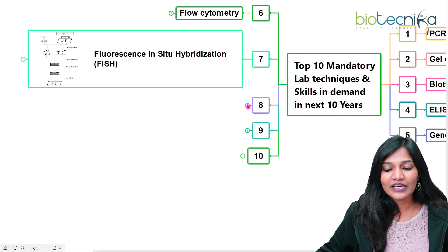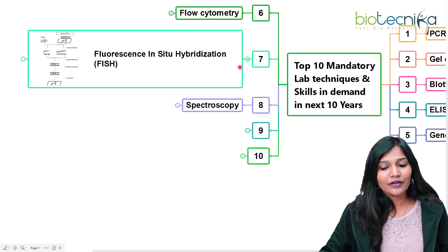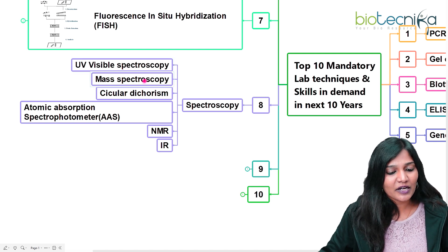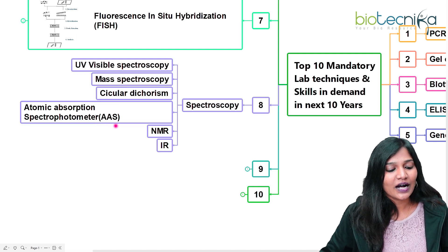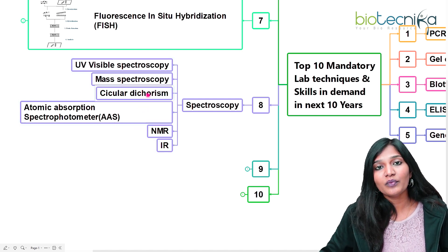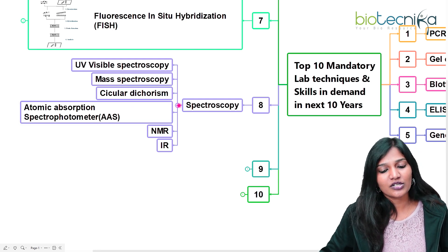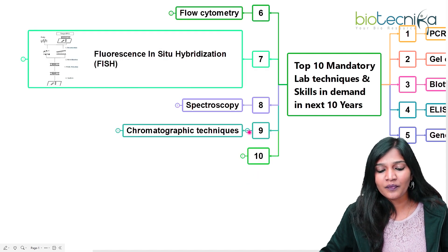The next important skill is spectroscopy. There are many types — UV-visible spectroscopy, mass spectroscopy, circular dichroism, IAS, NMR, and IR. If you know mass spectrometry, UV, or IR spectroscopy, that is very good. It is not necessary for a biologist to know circular dichroism, but knowing it is an advantage.